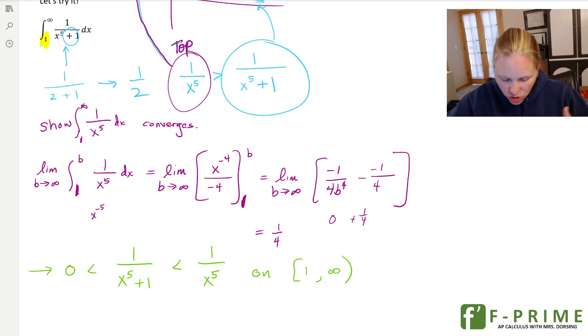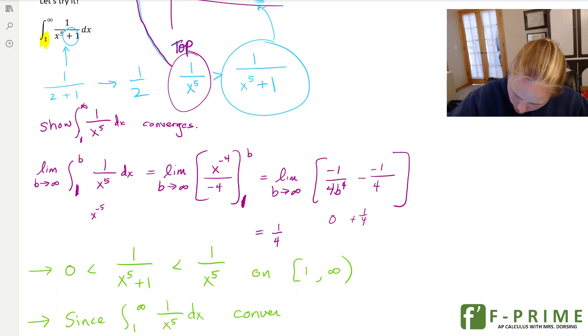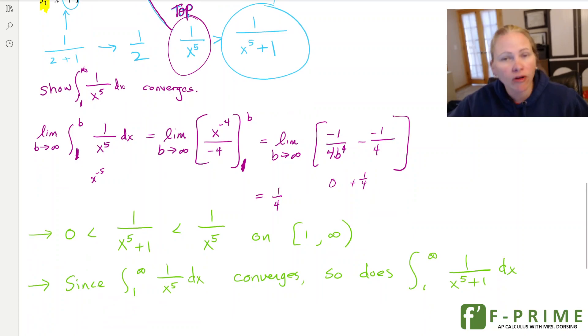And then step 2, since the integral from 1 to infinity of 1 over x to the 5th converges, so does my integral. Now what it converges to is not something I can find. Nope, never going to find it, at least not here, not right now. But I at least can say that yes, it converges.